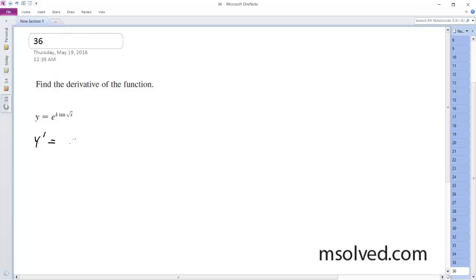So it's going to be e raised to k tangent of x. Well, the derivative of e ends up being itself, and then we want d/dx of k times the tangent of the square root of x.